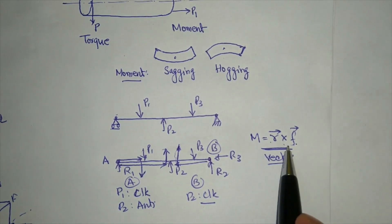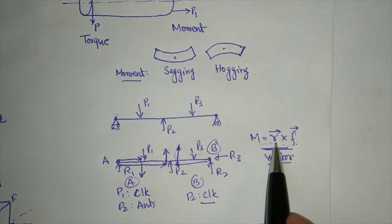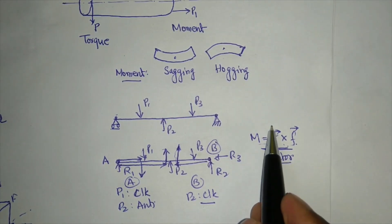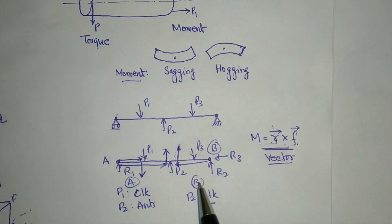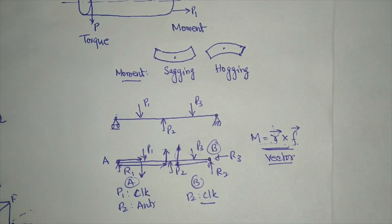To determine the direction, always first go in the direction of R, then twist your fingers in the direction of F using the right-hand thumb rule — you will get the direction of the moment. That is basically everything about moments and couples.